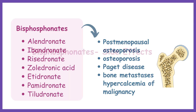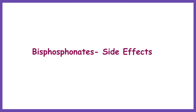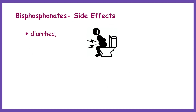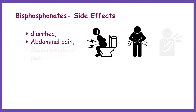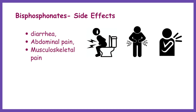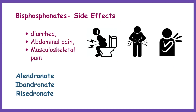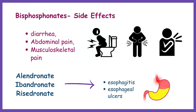Common adverse effects of these medications include diarrhea, abdominal pain, and musculoskeletal pain. Alendronate, risedronate, and ibandronate are associated with esophagitis and esophageal ulcers.